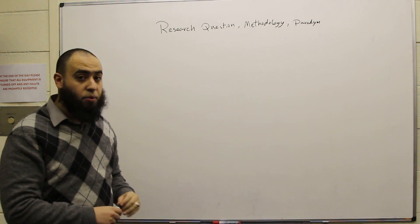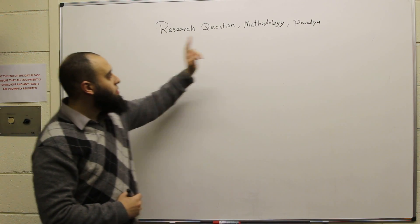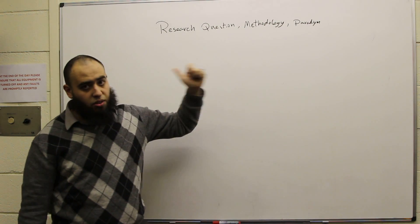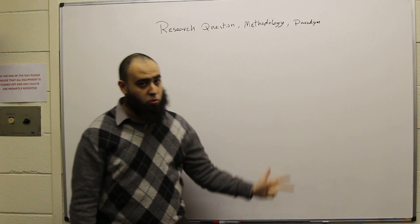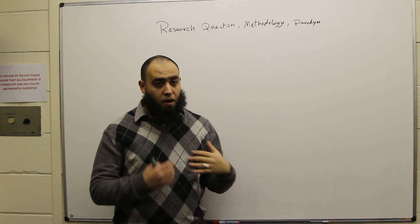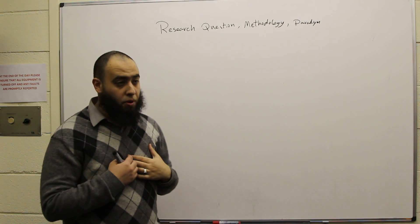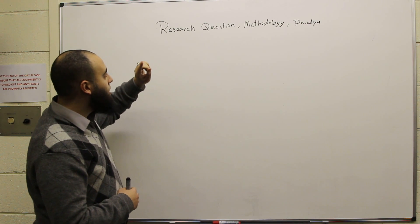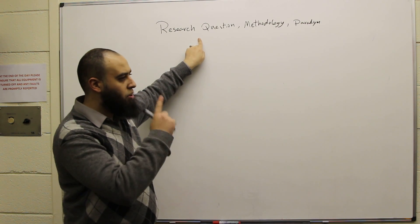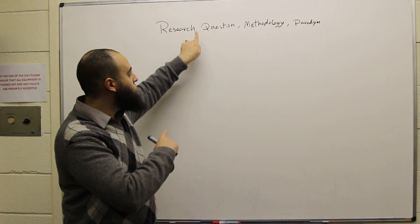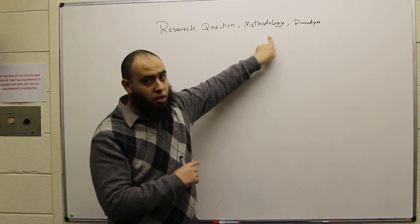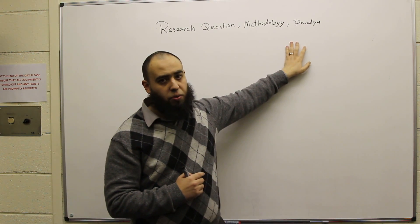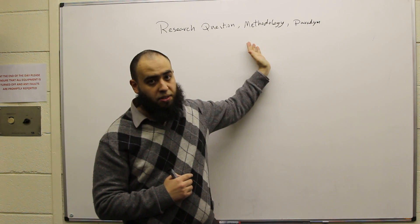That's why it's very important to relate three things together: the research question, the research methodology, and the research paradigm. If I were your reviewer, I would look at the relationship between your research question, methodology, and paradigm. If it's poor, you will fail. If it's good, you succeed.